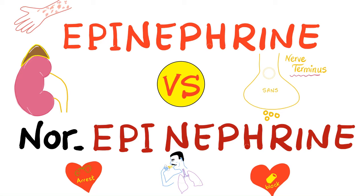Hey, it's Medicosis Perfectioneros, where medicine makes perfect sense, and today we continue our physiology playlist. In previous videos, we have talked about cholinergic and adrenergic, muscarinic versus nicotinic. Today, we'll compare between epinephrine and norepinephrine, alternate names adrenaline and noradrenaline. With that said, now let's get started.